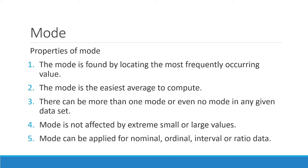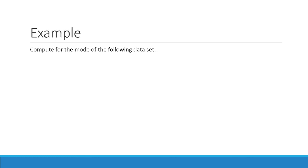You can use mode for nominal data. Here is how we compute for the mode of some interval and ratio data. For example, we need to compute for the mode of a given dataset. The mode is actually 10. Why? Because 10 appears three times in the dataset — it has the highest frequency, making 10 the mode.